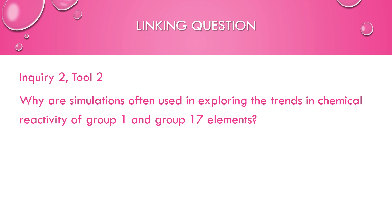This links back to our inquiry skills: why are simulations often used when exploring trends in chemical reactivity for group 1 and group 17? Simulations are used because, especially with the larger alkali metals, reactions with water can be very dangerous — they react violently and produce a lot of energy, becoming nearly explosive. Similarly, some group 17 elements are noxious gases or otherwise difficult to work with safely in the lab. Simulations allow exploration of their reactivity without the safety hazards.